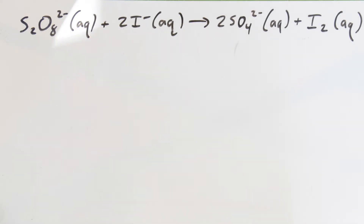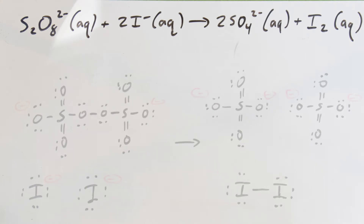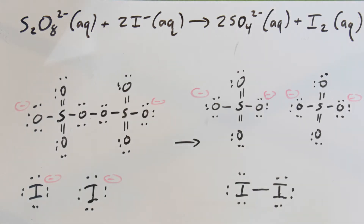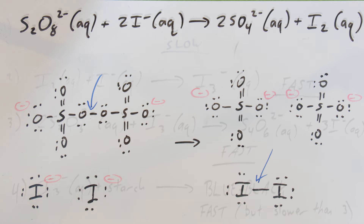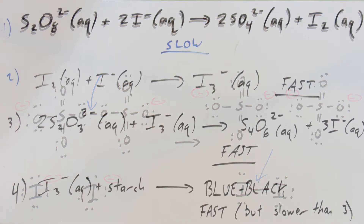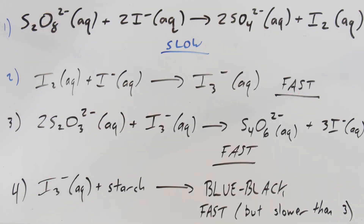The reaction in question is this: the persulfate anion reacts with two iodide anions to give us two sulfate anions and a molecule of diatomic iodine. I've drawn the dot structures out here because this is actually an electron transfer reaction. The iodines have an extra electron as anions, and the persulfate has a peroxide linkage — an oxygen to oxygen — in the middle, which we don't see in the final products. What we have is the breakage of that bond between the two oxygens, formation of a new bond between the two iodines, and electrons being shifted around.